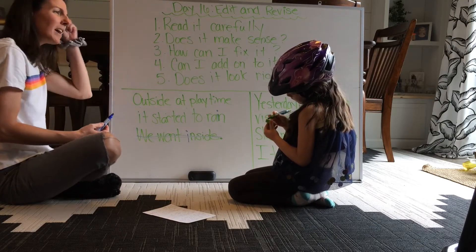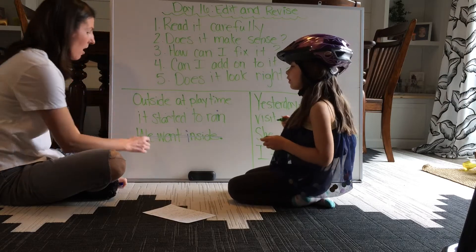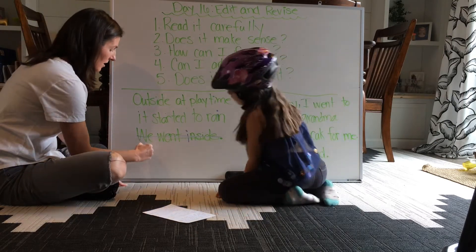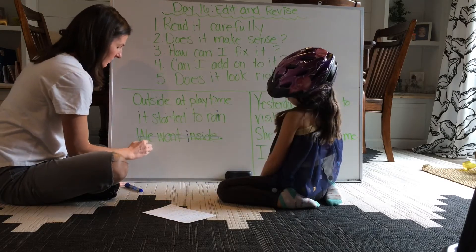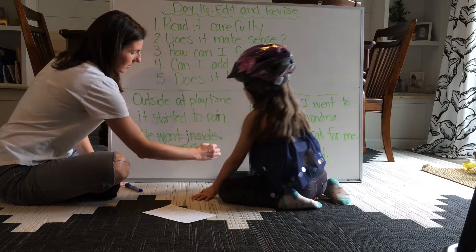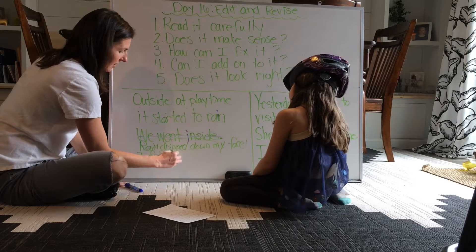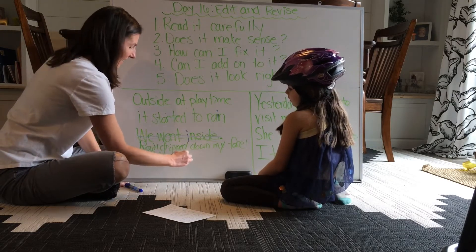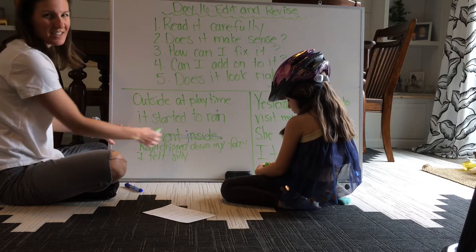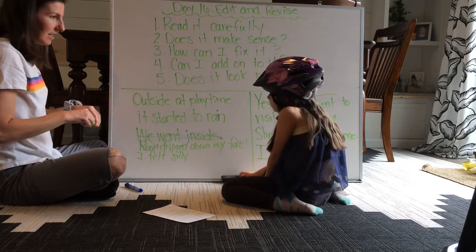'Outside at playtime, it started to rain' — what happened right after it started to rain? We closed the garage and then we played in there. But even before closing the garage, rain dripped down my face — I felt silly! So I took away the weak ending and added: 'Rain dripped down my face. I felt silly.' That gives our story a much better ending with thoughts and feelings.